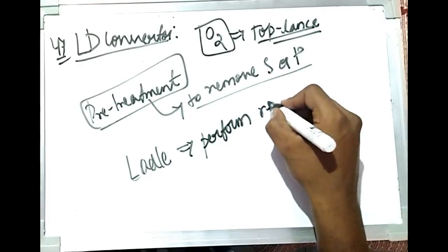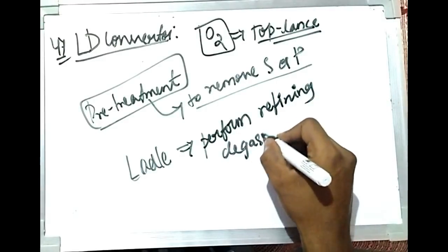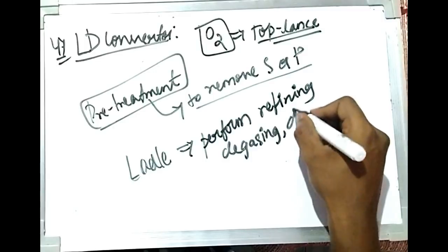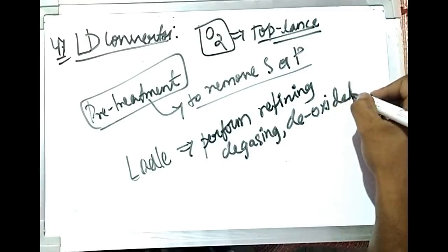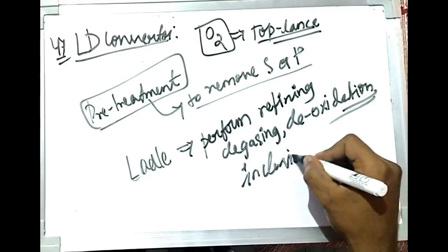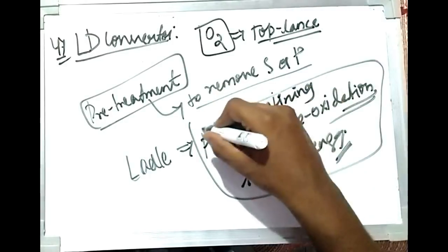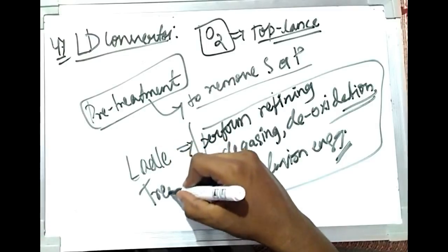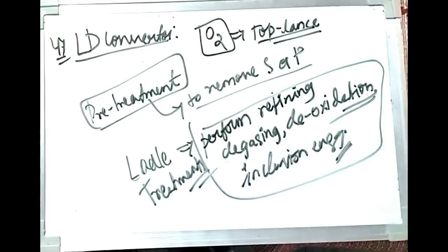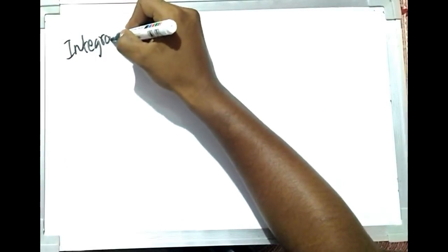Developments in ladles now allow them to perform ladle treatments such as refining, degassing, deoxidation, and inclusion engineering. All these processes are known as ladle treatments. Now we will see the flowchart of what takes place in integrated steel plants.